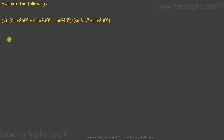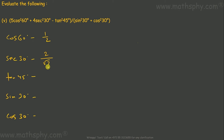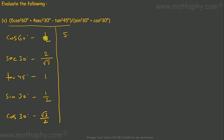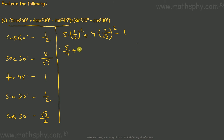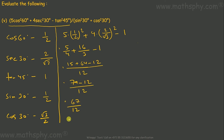For the final equation: 5 cos squared 60 plus 4 sec squared 30 minus tan squared 45, all over sin squared 30 plus cos squared 30. For the numerator: 5 times (1 over 2) squared is 5 over 4; plus 4 times (2 over root 3) squared is 16 over 3; minus tan squared 45 which is 1. This gives 5 over 4 plus 16 over 3 minus 1, which equals 67 over 12.